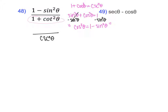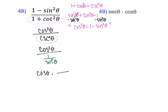Now the bottom, cosecant squared, I'll switch to its identity: cosecant is 1 over sine, and since it's squared, that's 1 over sine squared. I'm dividing by a fraction, so I flip it — giving cosine squared on top times sine squared. Multiplying straight across gives cosine squared times sine squared. I can't really simplify these two further, so I'll leave my answer like this.